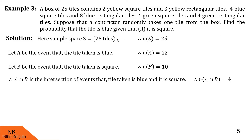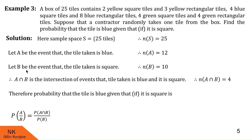Now let us find the probability that the tile is blue given that it is a square, i.e., P of A given B. By the conditional probability formula, P of A given B equals P of A intersection B upon P of B. P of A intersection B is 4 by 25 and P of B is 10 by 25. So P of A given B is 4 by 10, which equals 2 by 5. I hope you understood this answer.